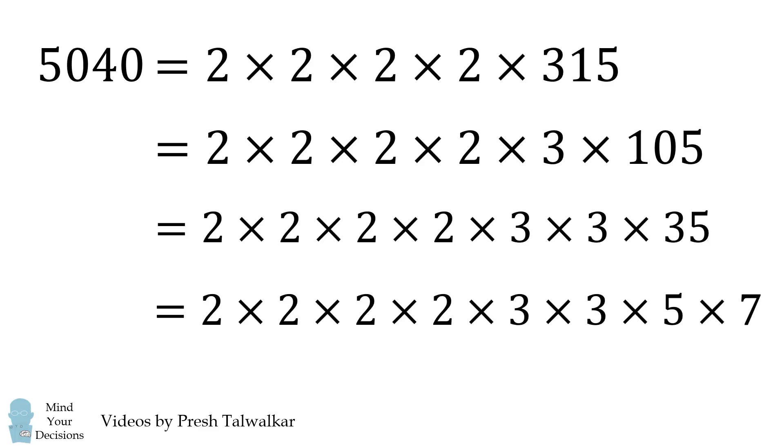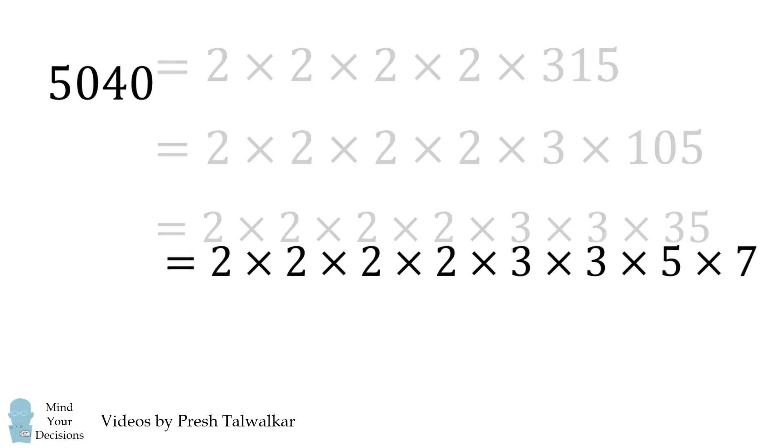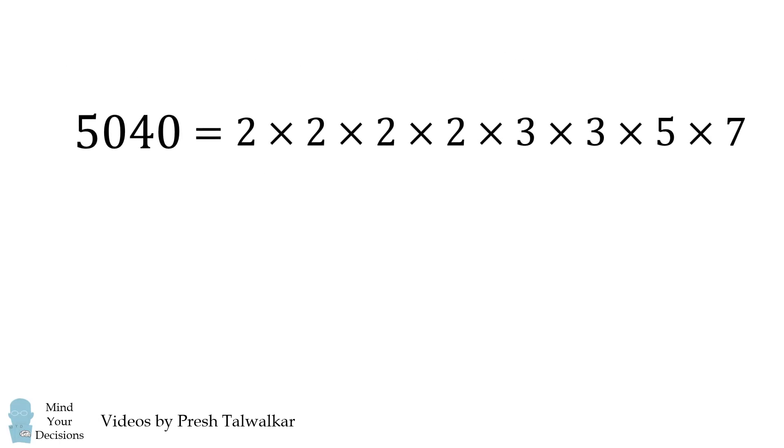Now 35 is equal to 5 times 7. This is the prime factorization of 5040. We need the quotient of this with its unique prime factors. The unique prime factors are 2, 3, 5, and 7.